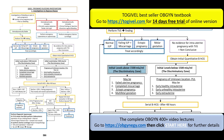The beta-hCG level may be above the discriminatory zone, meaning you should be able to see something. If the level is above 1500 mIU/mL and you are not seeing a pregnancy in or outside the uterus, this may be because of a failed intrauterine pregnancy, a complete miscarriage, an ectopic pregnancy not visible outside the uterus, or a multi-fetal gestation with two small sacs that will appear after some time.